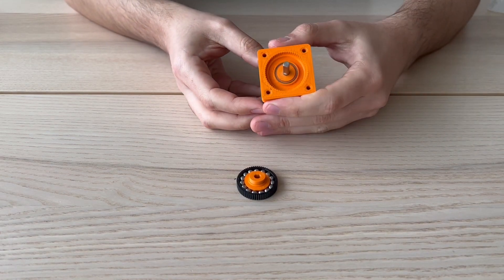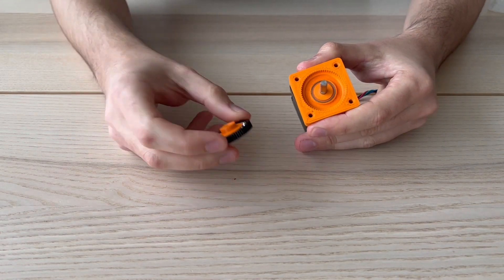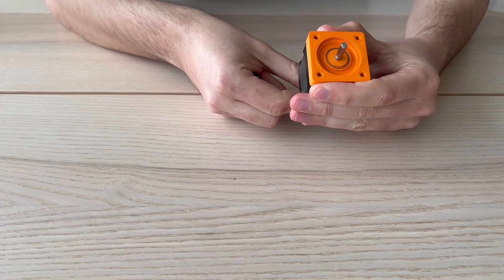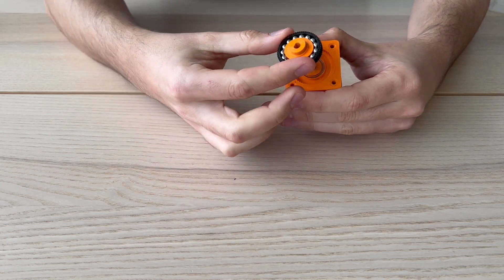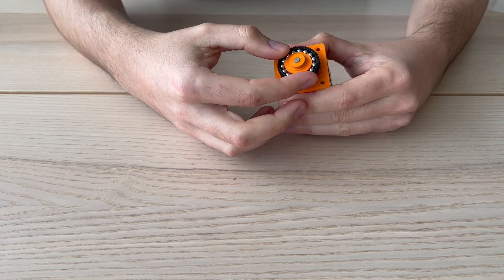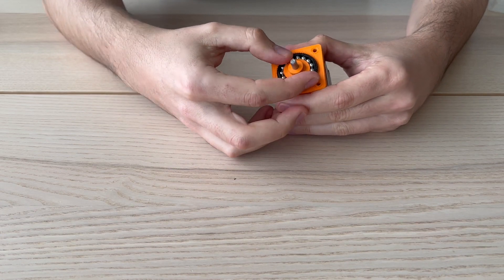Once the flex spline is assembled, we introduce it in the motor axis and align the teeth. Then press until you hear a light click.